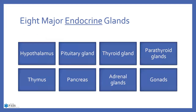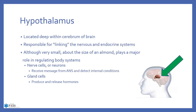When talking about the endocrine glands, there are eight we primarily discuss: the hypothalamus, the pituitary, the thyroid, the parathyroids, the thymus, the pancreas, the adrenals, and the gonads. We'll look at a few of these in more depth, but won't spend a ton of time because it's the diabetic care I really want to get into.